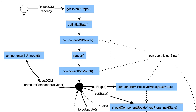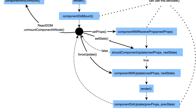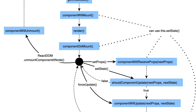These methods are triggered when your component is mounting for the first time or when you reload the page. When you update the state using forceUpdate or this.setState, the update lifecycle triggers. It calls shouldComponentUpdate, and if that returns true, it calls componentWillUpdate, render, and componentDidUpdate. componentWillReceiveProps can also be triggered to check if updated props are coming from the parent component.